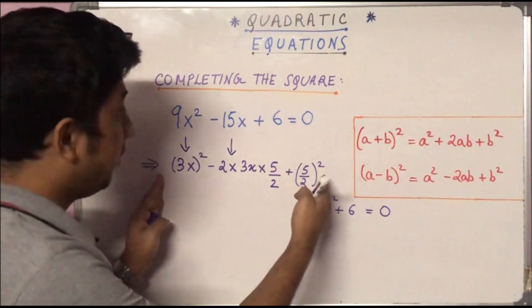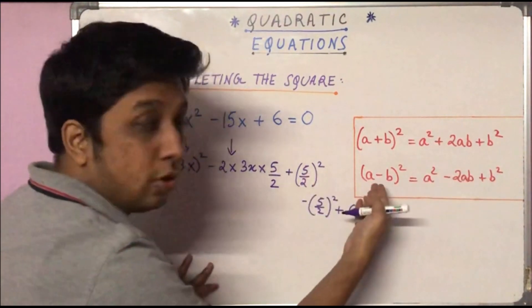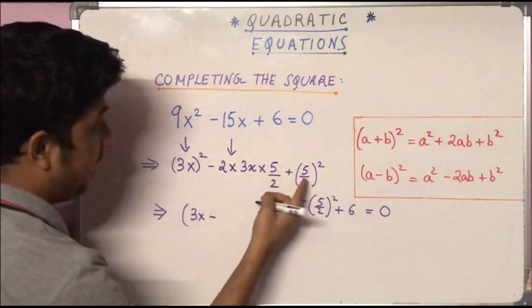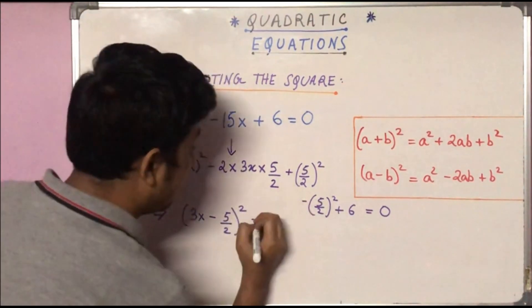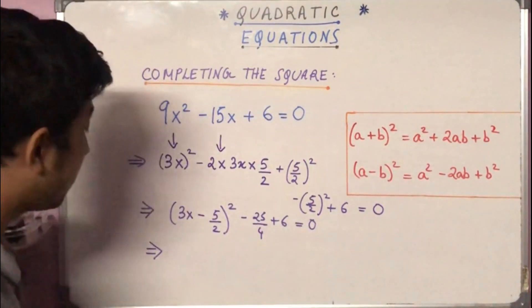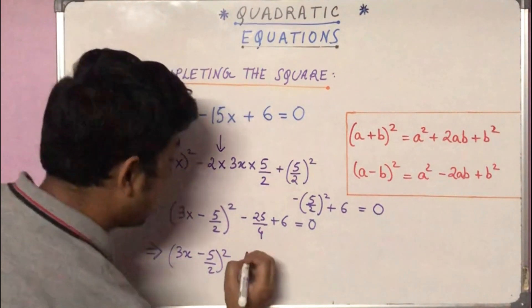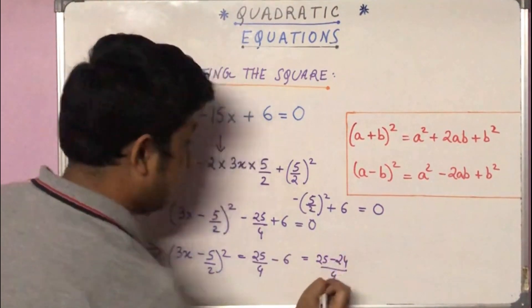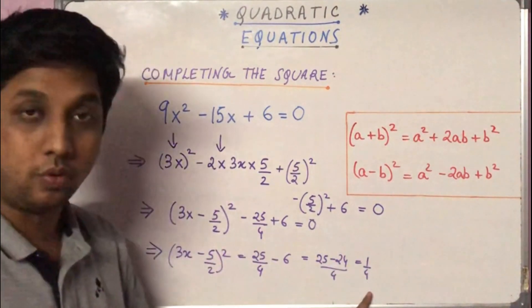Now the part a² - 2×a×b + b² becomes (a - b)², which is (3x - 5/2)². For the remaining terms, we calculate: -（5/2)² + 6 = -25/4 + 6. Taking the constant terms to the other side gives us 25/4 - 6.